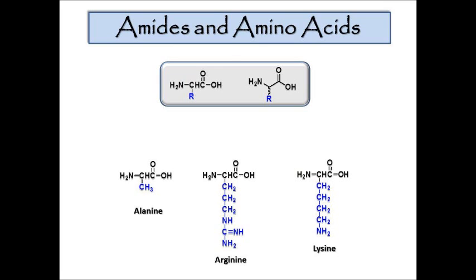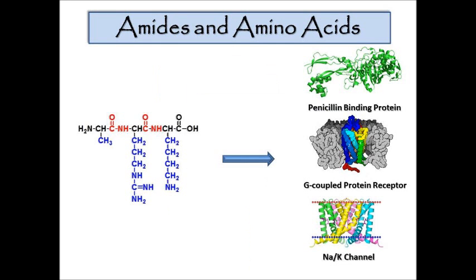Amides and amino acids are very important. The amino acids have a core backbone structure drawn in black, and then we have the side chains — that's really where the variance is. On the bottom I've got alanine, arginine, and lysine. These groups, depending on the order that they're strung together, can give you a variety of different protein structures. As you can see here, if you string these in a certain sequence you can essentially get a variety of different structures, such as the penicillin-binding proteins we've already seen, G-protein-coupled receptors, and sodium-potassium channels.